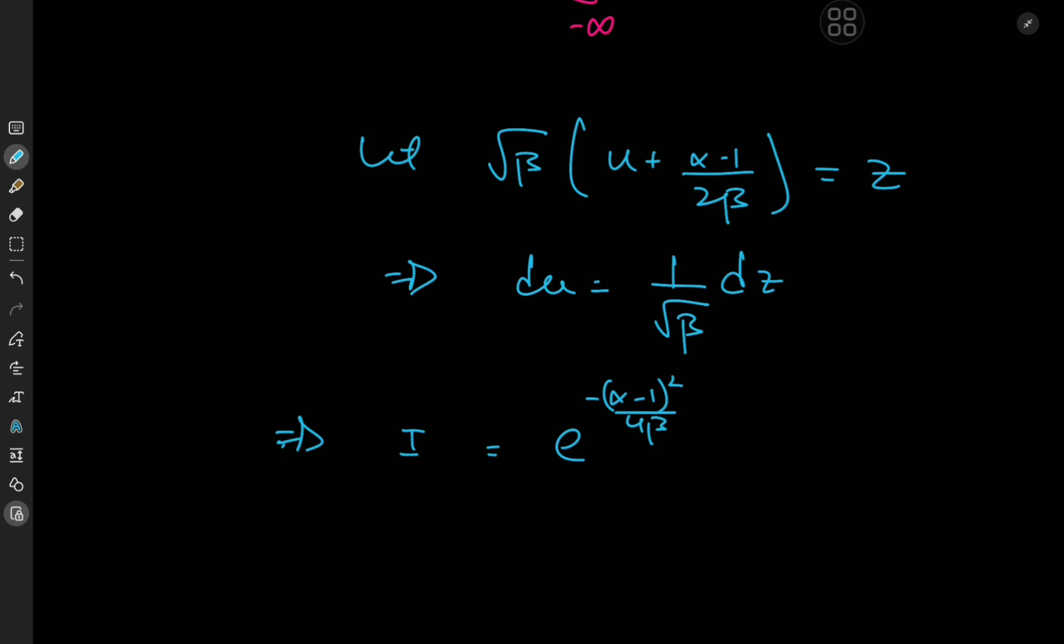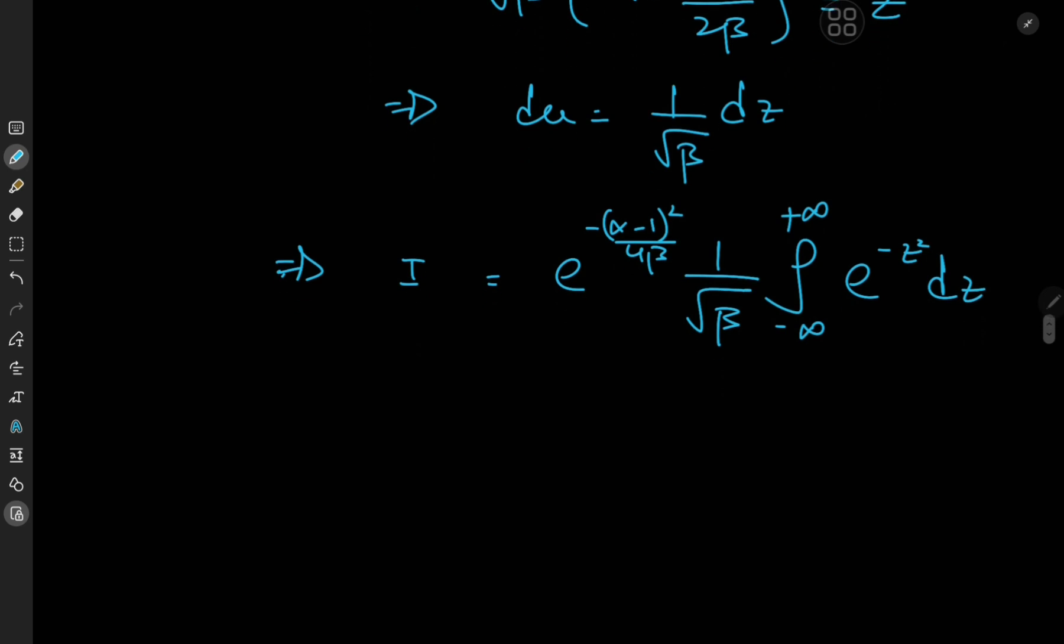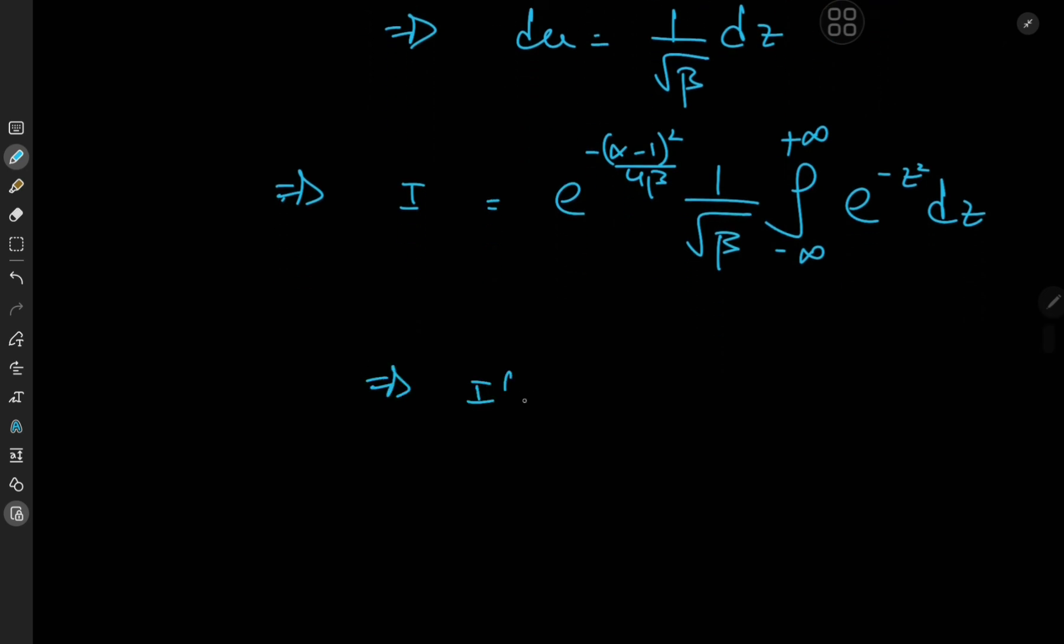Terribly sorry about all of that. We have 1 over root beta times the integral from negative to positive infinity of e to the negative z squared, which certainly seems familiar. That's our boy the Gaussian integral. And this thing, of course, evaluates out to root pi. So we have this nice looking structure here that i of alpha and beta equals root pi by beta times e to the negative alpha minus 1 squared divided by 4 times beta.